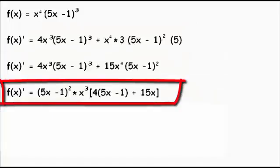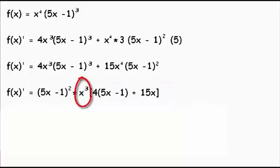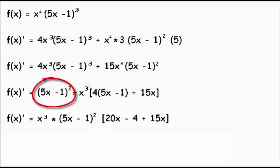where we are now factoring out x cubed instead of x squared. By taking out x cubed and 5x minus 1 all to the power of 2, we are left with 20x minus 4 plus 15x.